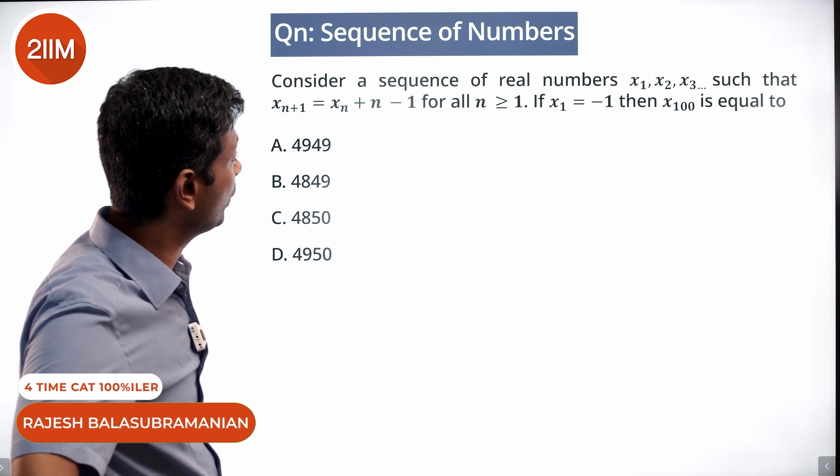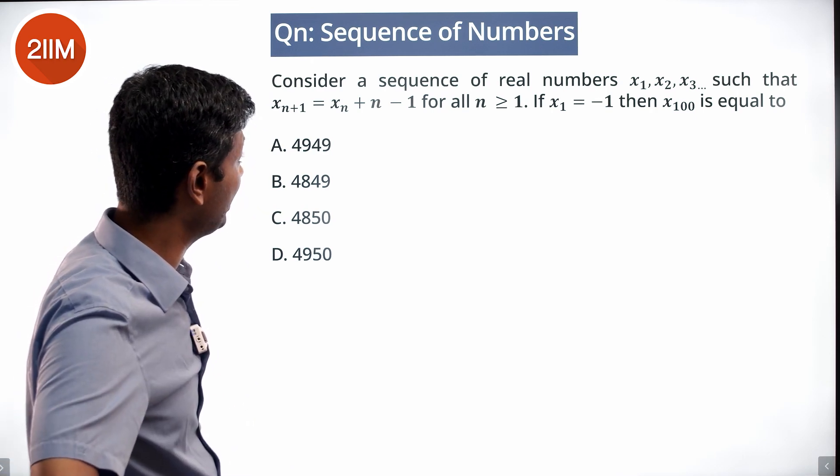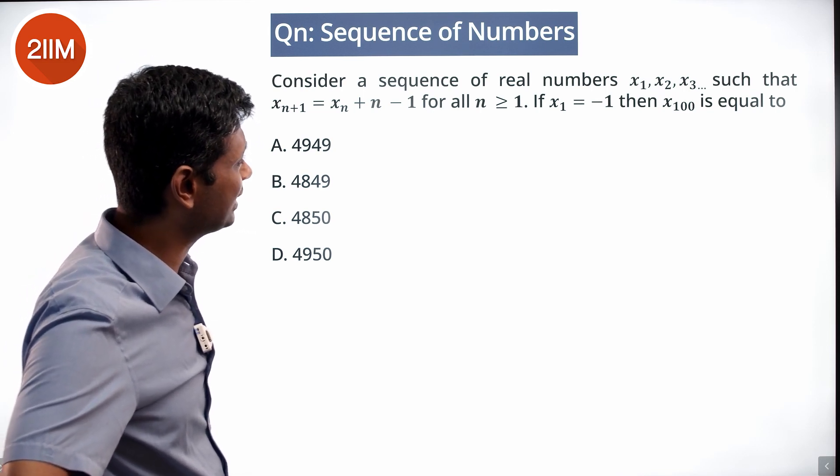Consider the sequence of real numbers x1, x2, x3 such that x_{n+1} = x_n + n - 1 for all n greater than or equal to 1. If x1 = -1, then x100 equals what?